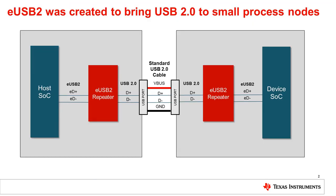The embedded USB 2.0 physical layer supplement to the USB 2.0 specification was developed to address the need for a low-voltage USB 2.0 PHY solution. As technology nodes for SoCs in phones, tablets, and laptops scale smaller and smaller, it becomes more difficult to support 3.3-volt I/O cells. eUSB2 drops signaling levels to 1.2 volts or lower and provides enhancements to optimize power efficiency.